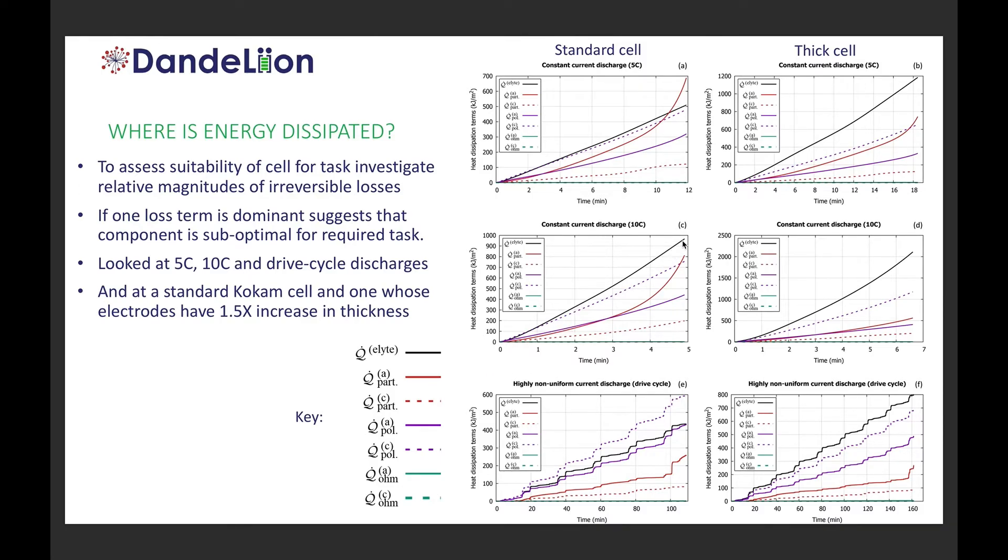In a 10C discharge it turns out the dominant source of dissipation actually comes from the electrolyte. And in a non-uniform drive cycle, for our drive cycle, the dominant source of dissipation comes from polarisation losses on the edges of the cathode particle.